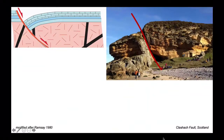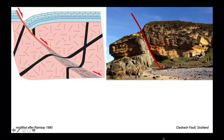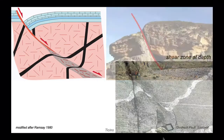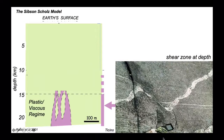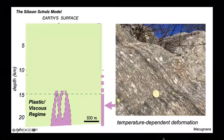Faults are often shown as single lines on cross sections. As you go down deeper in the crust, they can broaden out into zones of more dispersed deformation or shear zones. This change in deformation with depth is shown in this idealised cartoon, which shows that at depth the deformation is governed by plastic and viscous behaviours, generating materials where the rocks are streaked out. Deformation under these conditions is dependent on temperature.